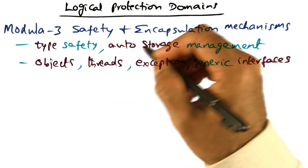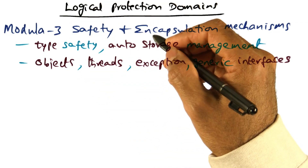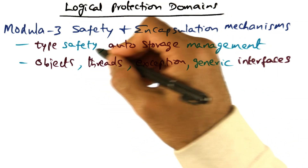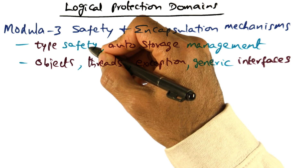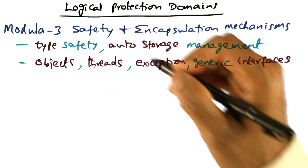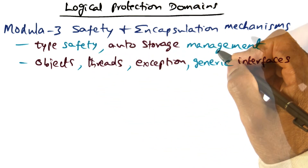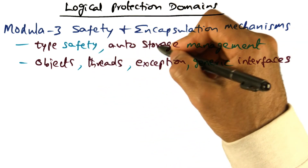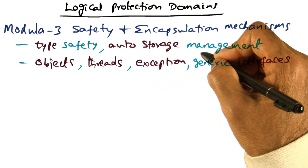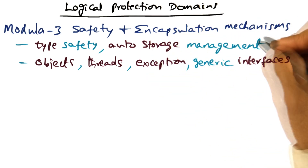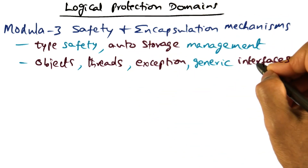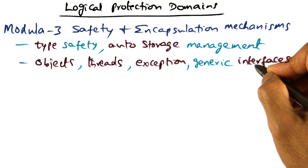Modular 3 is a strongly typed language with built-in safety and encapsulation mechanisms. It does automatic management of memory, and since it does automatic storage management, there are no memory leaks.